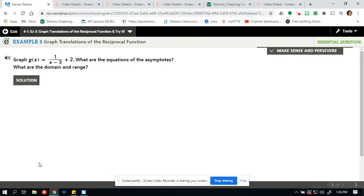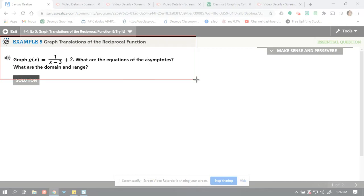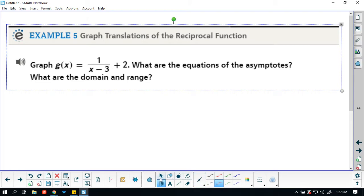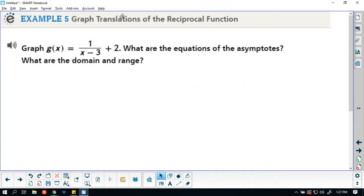It says graph g of x equals one over x minus three plus two. Our constant here is one. Our constants can change, but the shape of the graph will most likely stay the same. What are the equations of the asymptotes? What are the domain and range?